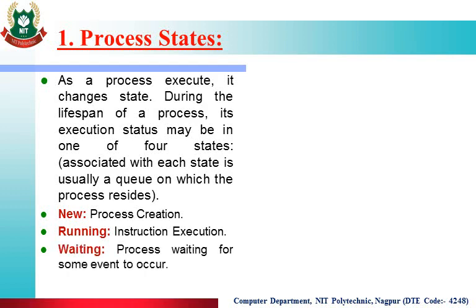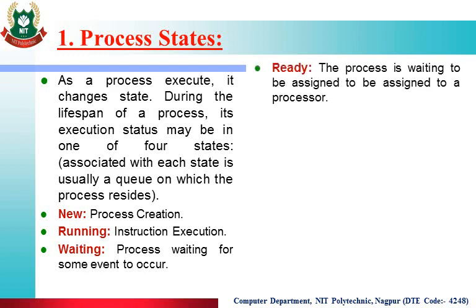Next is Waiting — process waiting for some event to occur. If the process needs some resource during execution, it requests that resource and releases the CPU, then waits for that device or resource. If the resource is not present at that time, the state of the process is Waiting. Next is Ready — the process is waiting to be assigned to a processor. Processes that are ready to be sent to the CPU wait in the ready queue — the state of the process is Ready. Last is Terminated — if the process executes properly, the state is Terminated.